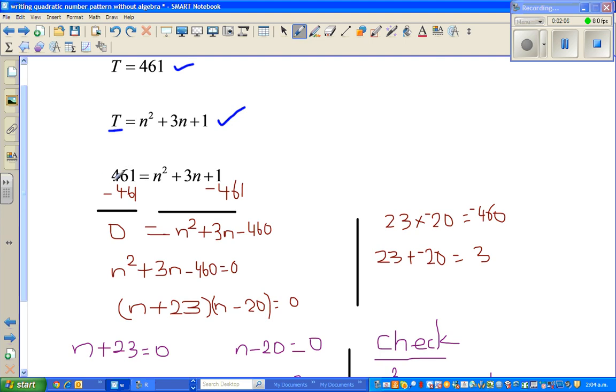Now I want to get rid of this 461 from this side. So I took away 461 from this side, so I have to also take away from the other side. So zero is equal to N squared plus 3N minus 460.